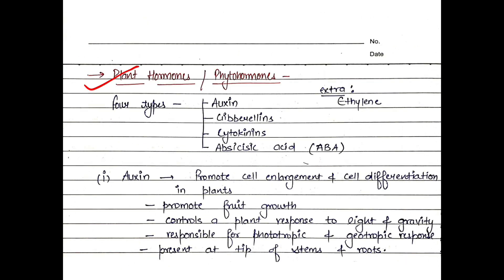There are four types of plant hormones: Auxin, Gibberellin, Cytokinin, and Abscisic Acid. And another is Ethylene. There are many types of plant hormones.